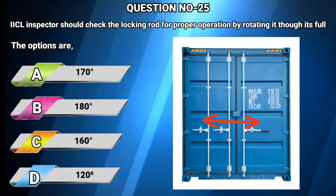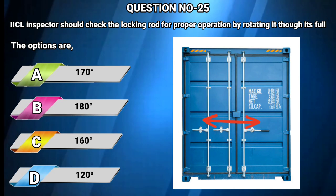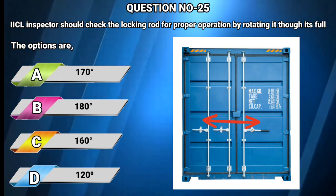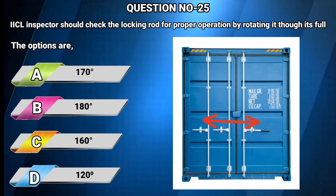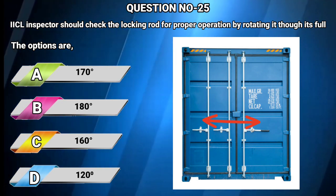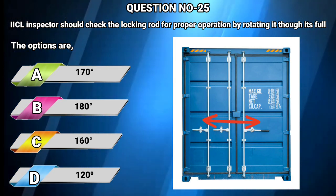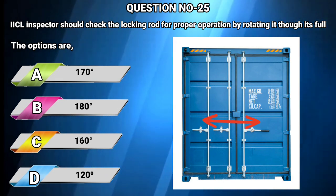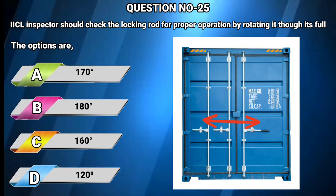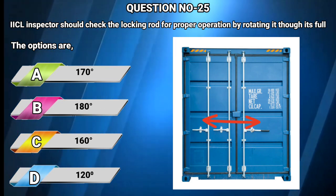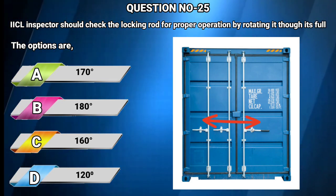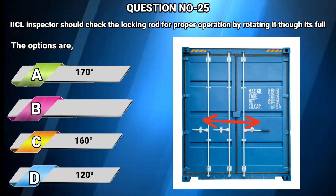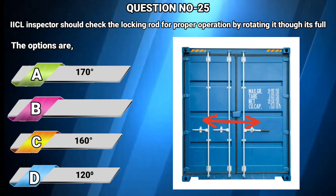Question number 25: An IICL inspector should check the locking rod for proper operation by rotating it through its full arc. Options: A) 170 degrees, B) 180 degrees, C) 160 degrees, D) 120 degrees. The answer is B: 180 degrees should be rotated for proper operation.